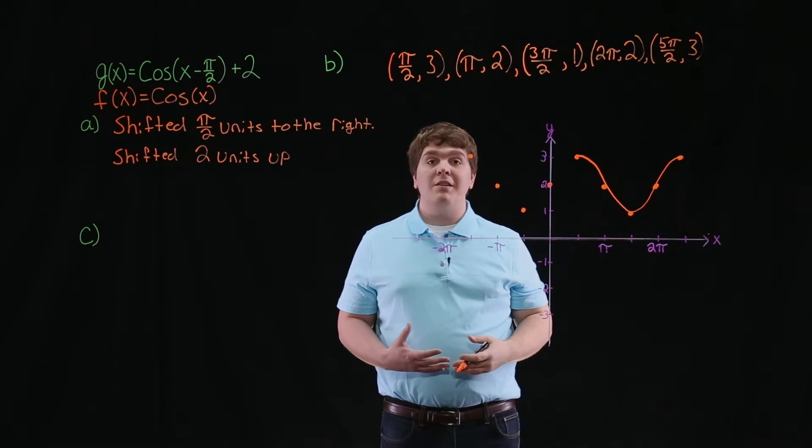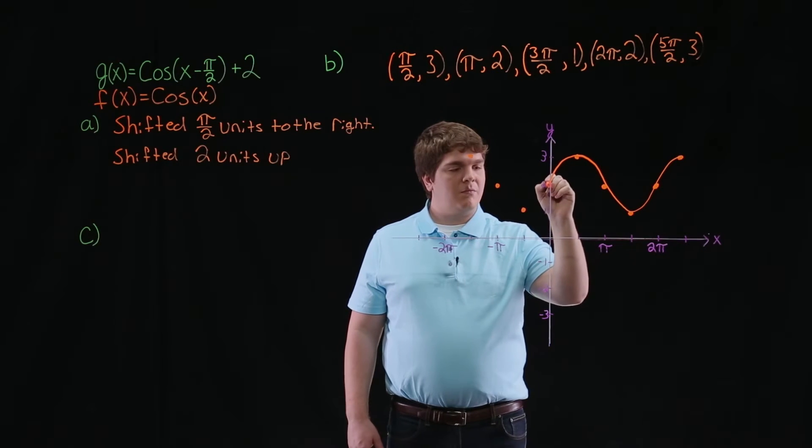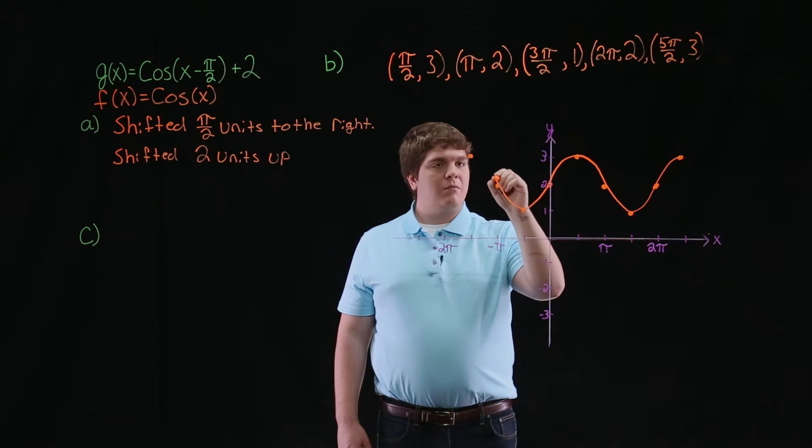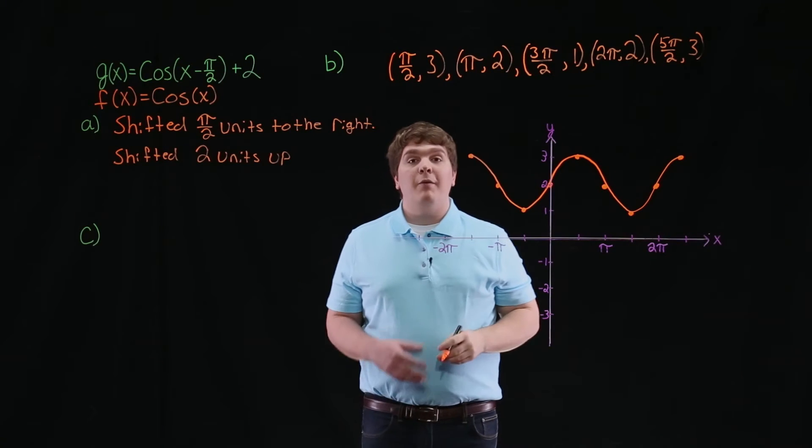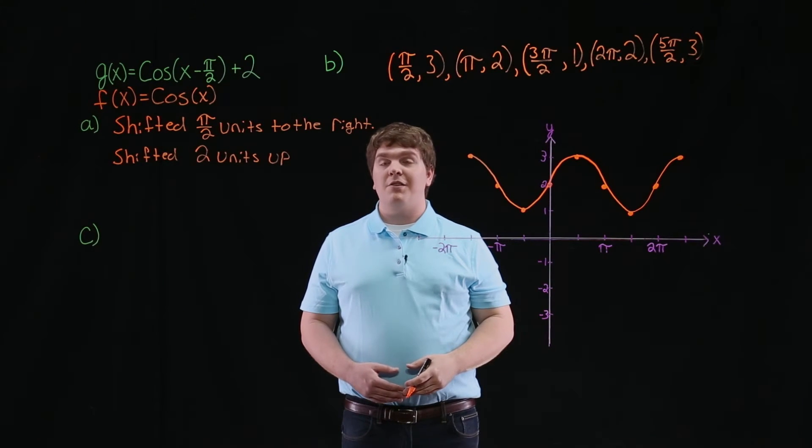And again, to complete this period, we'll connect these points with a smooth curve. And there we have two periods of g of x equals cosine of x minus pi over 2 plus 2.